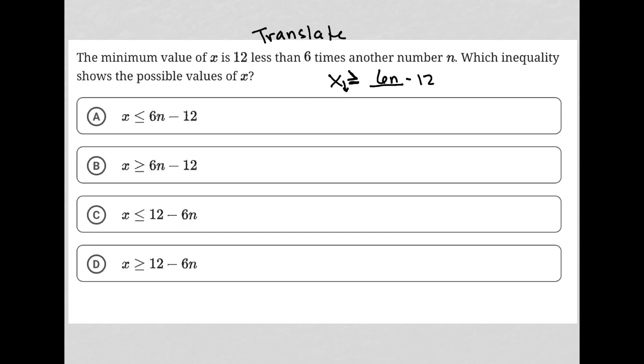Right? If it equals it, that makes it the smallest thing it can be. And then greater than means you're only going up from there. So that makes sense. X is greater than or equal to 6N minus 12.